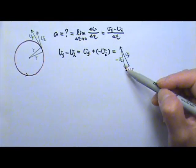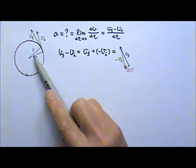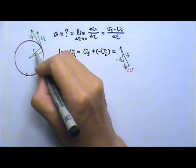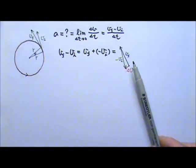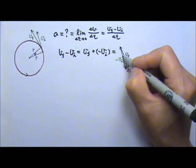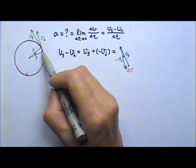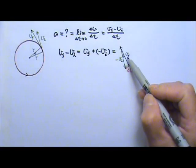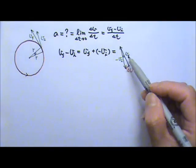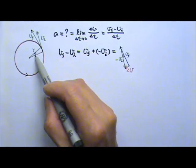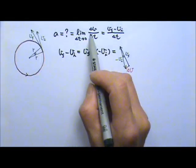Now let's compare this triangle to this triangle over here. When the radius makes this angle, that means the velocity would turn by the same angle. That means over here, this angle is the same as that. So this is an isosceles triangle: R, R, and this will be the distance traveled. For this here, speed is the same, so these two are also equal. That means this is also an isosceles triangle, and this angle is the same as that. That means these two triangles are similar.